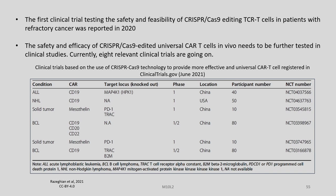The first clinical trial testing the safety and feasibility of CRISPR-Cas9-edited TCR T-cells in patients with refractory cancer was reported in 2020. The safety and efficacy of CRISPR-Cas9-edited universal CAR T-cells in vivo needs to be further tested in clinical studies.